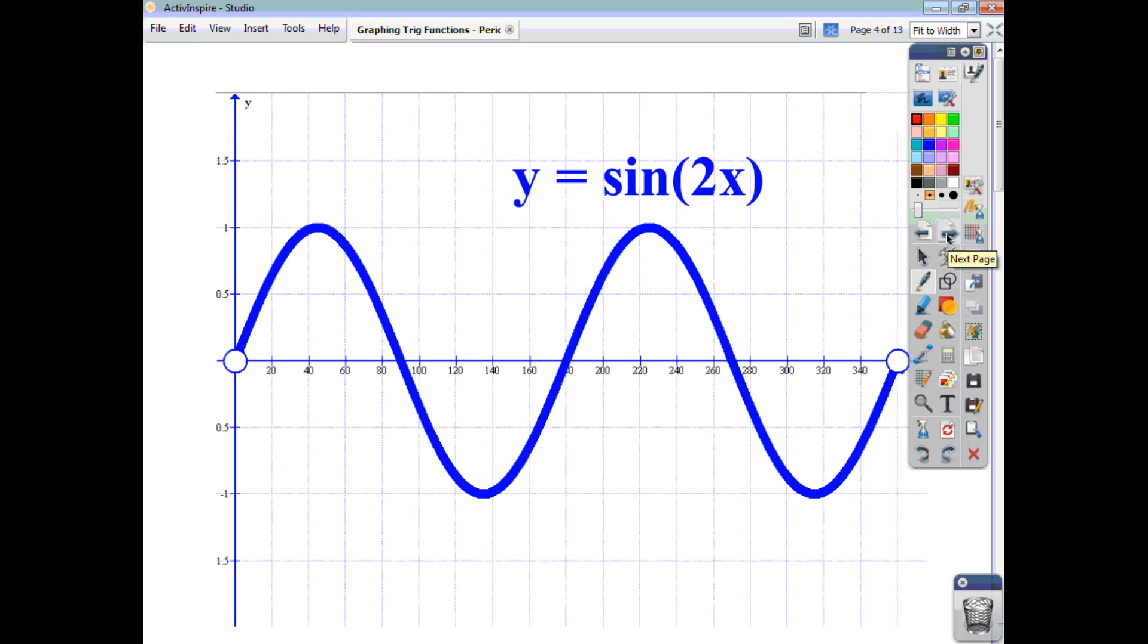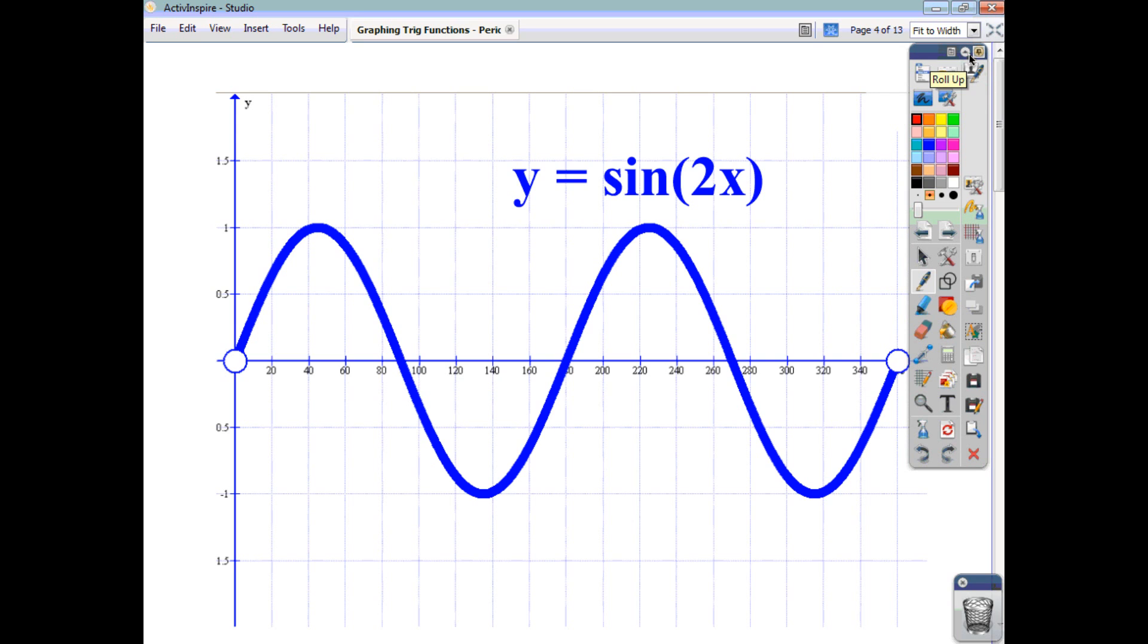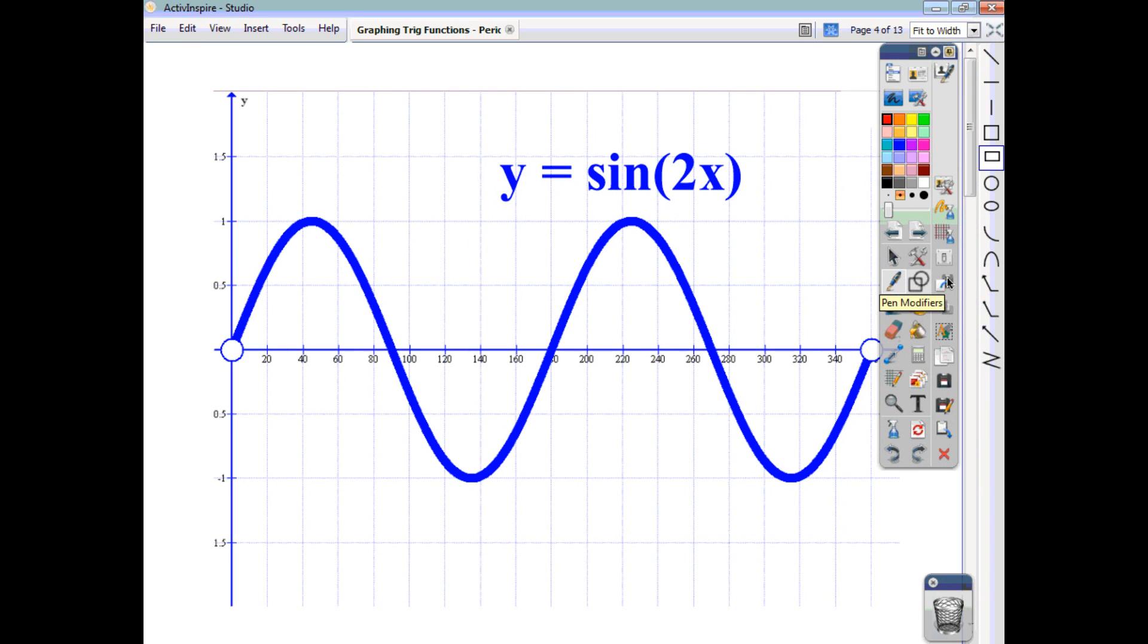Now, what we end up with, with y equals sine 2x, is the sine wave, but with a much shorter cycle. So instead of having a cycle of 360 like we had, we now find that our period length is 180, and we end up with two sine waves within 360 degrees.